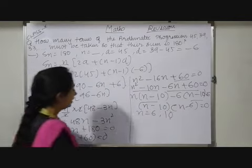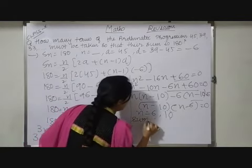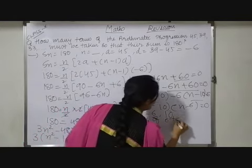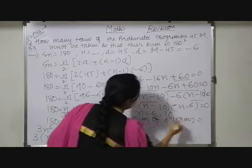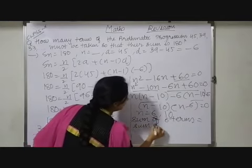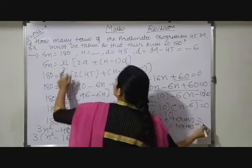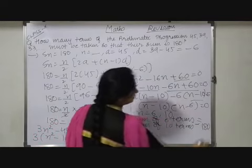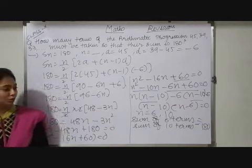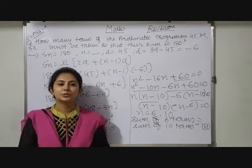What does it mean? It means sum of 6 terms equals to sum of 10 terms equals to 180. So this way students, here we have to conclude. Hope this solution is understood to you. Thank you.